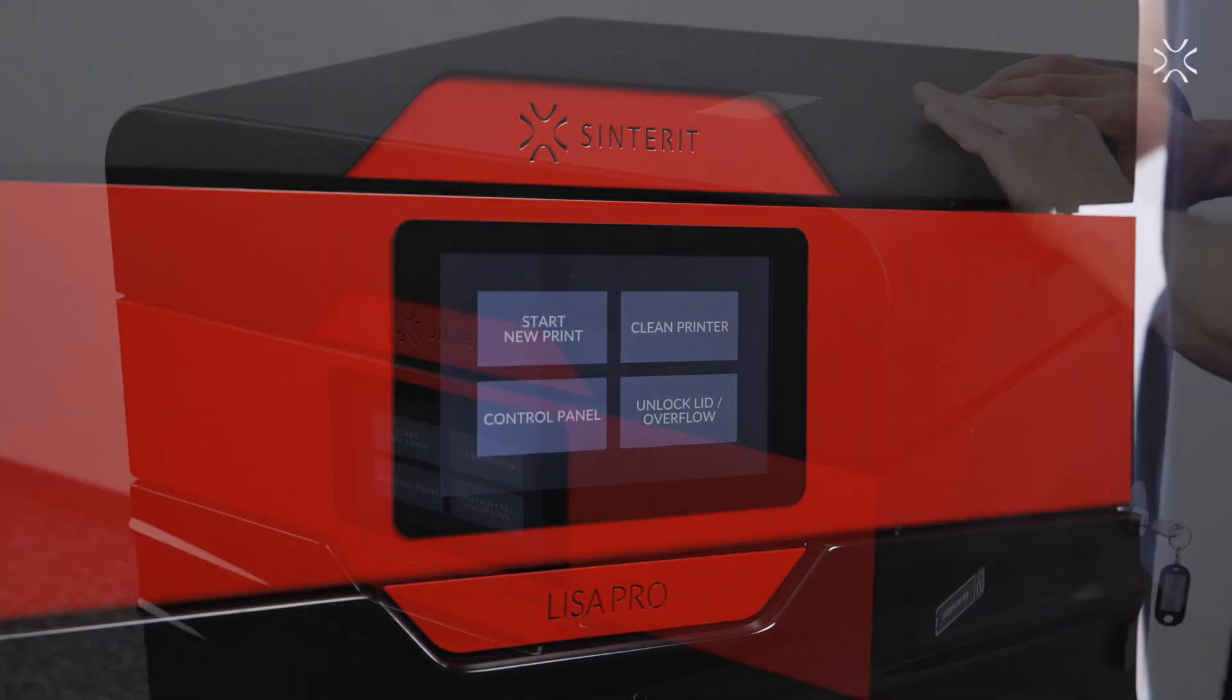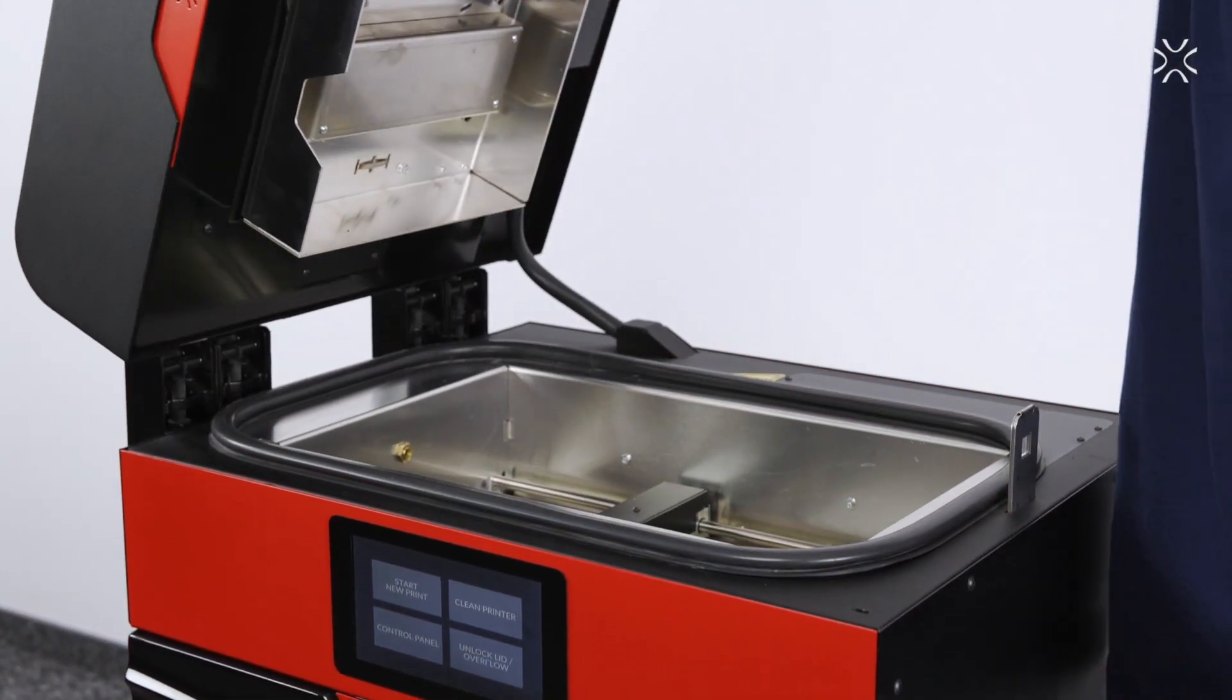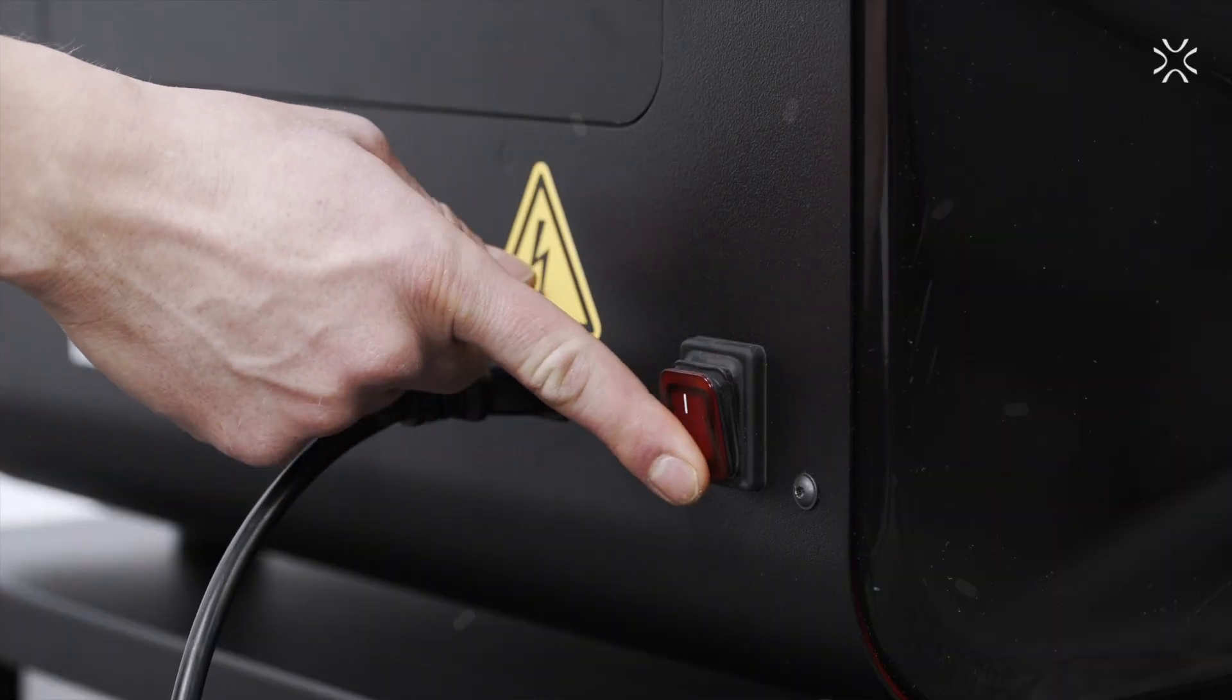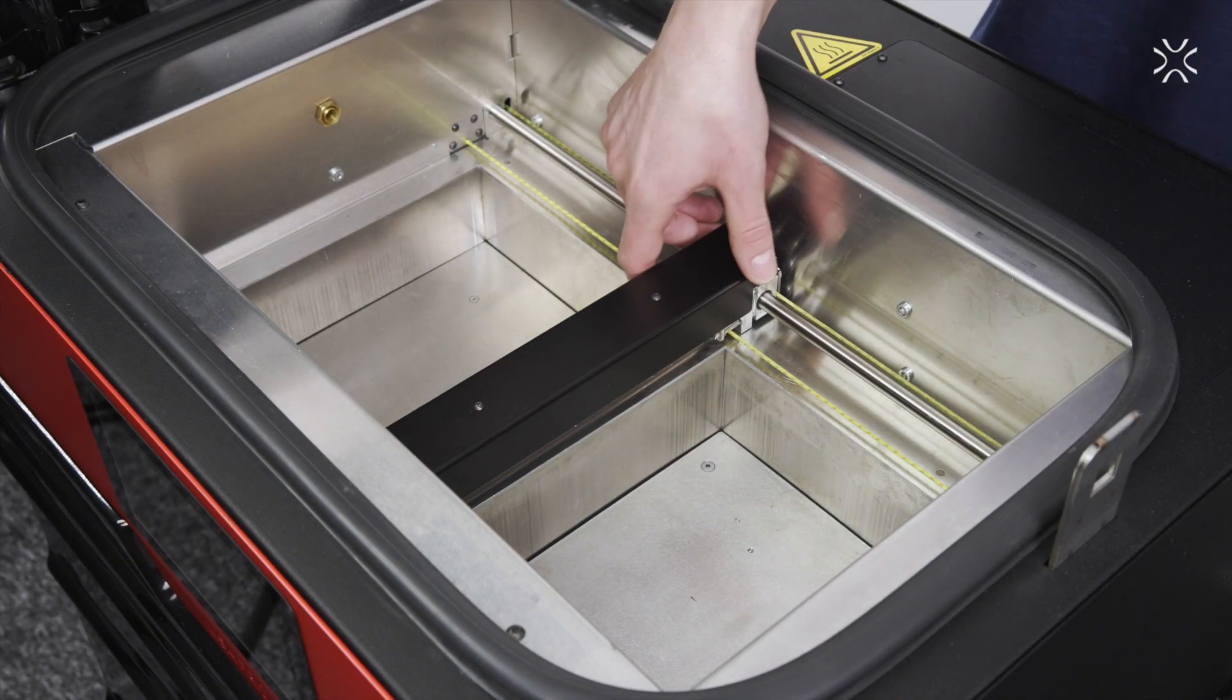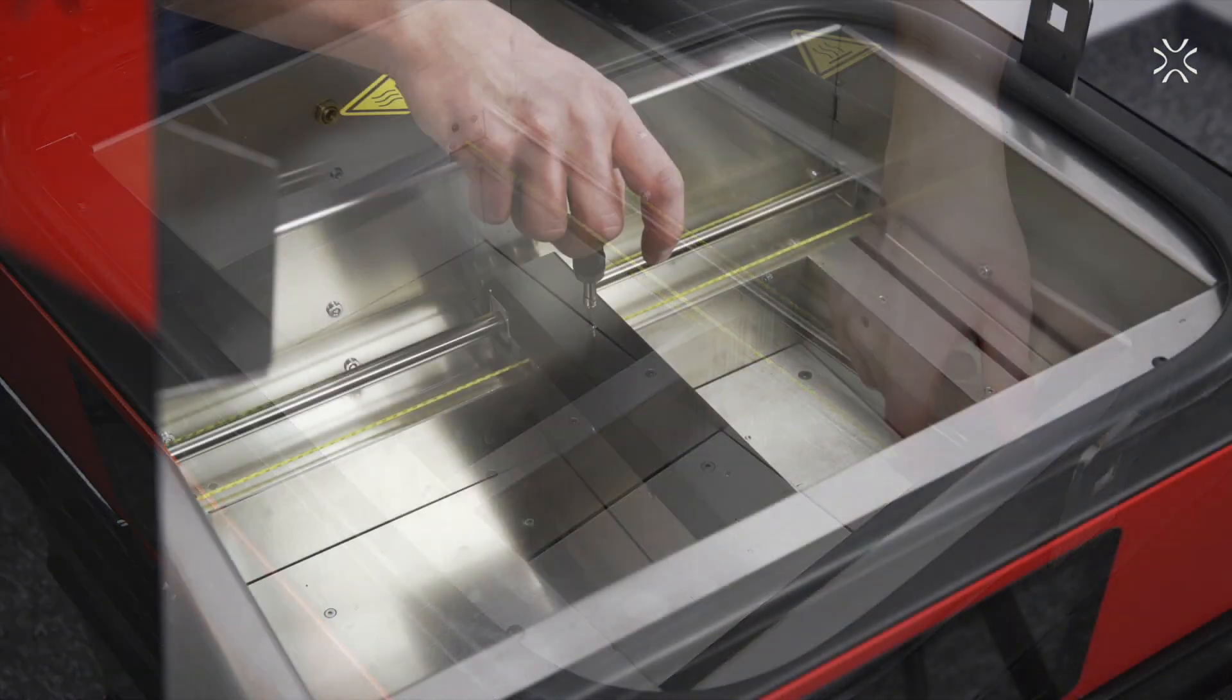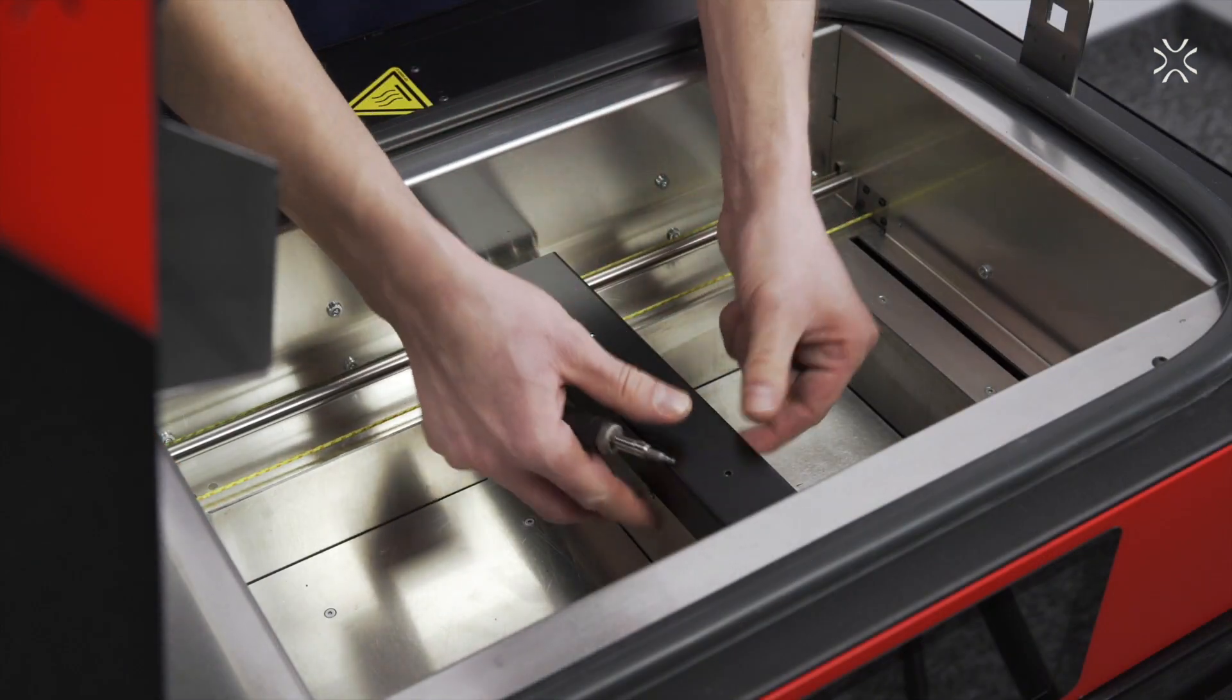Open the printer to get access to the Recoater. Turn off the printer. Remember you are able to move the Recoater arm manually. Remove the black Recoater cover.